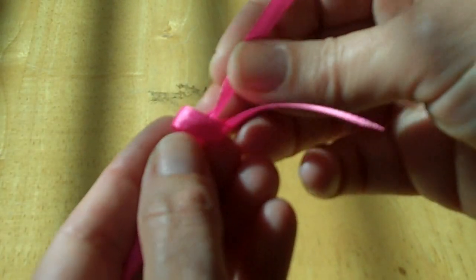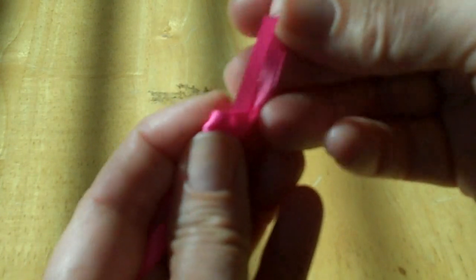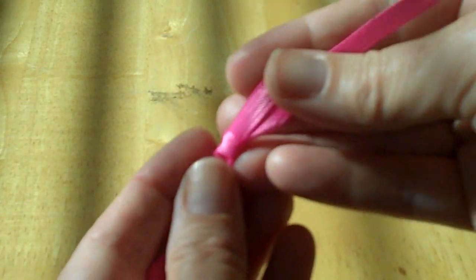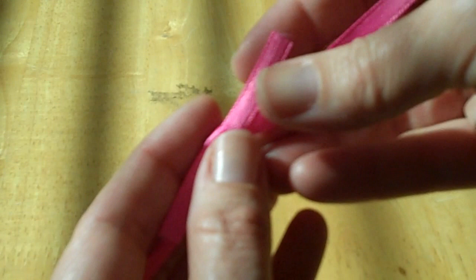And now you're going to pull on this other ribbon portion here, so you just tug at it, trying to keep that in the center as much as possible, and you can still move it.